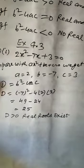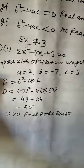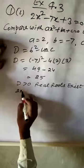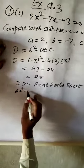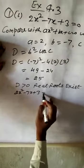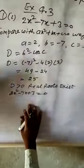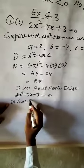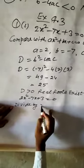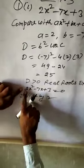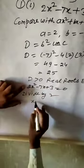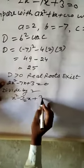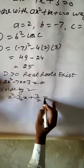Now solve by the completing square method. Starting with 2X square minus 7X plus 3 equal to 0, divide throughout by 2. So X square minus 7 upon 2 times X plus 3 upon 2 equal to 0.